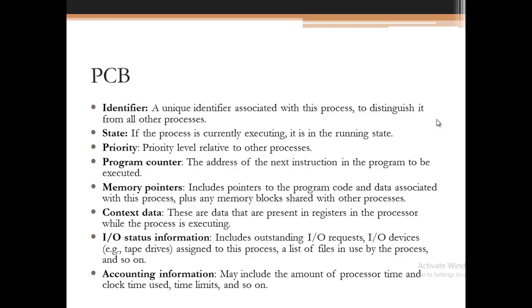State indicates whether the process is currently executing (running state), blocked, or in another state — the different states of a process will be discussed in the next lecture. Priority relates to the priority level of the process relative to other processes in memory. Program counter stores the address of the next instruction in the program to be executed, and it is continuously updated in the PCB.